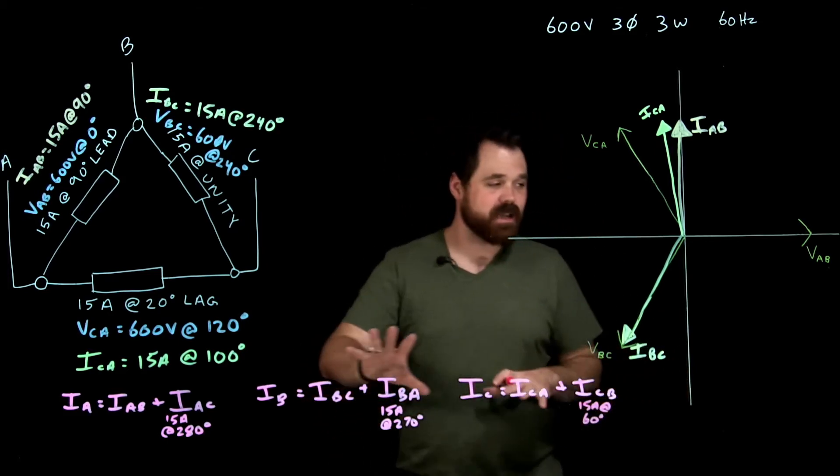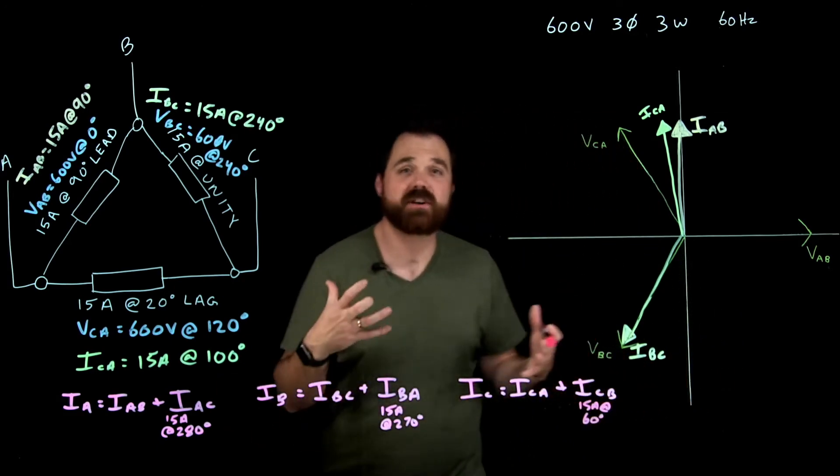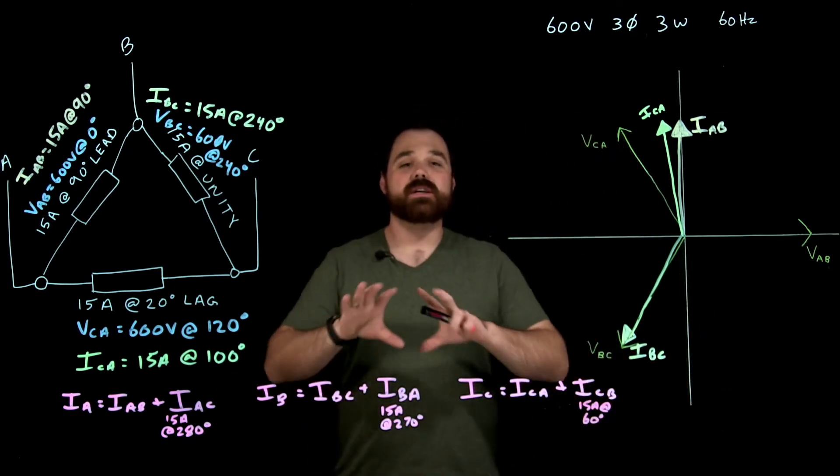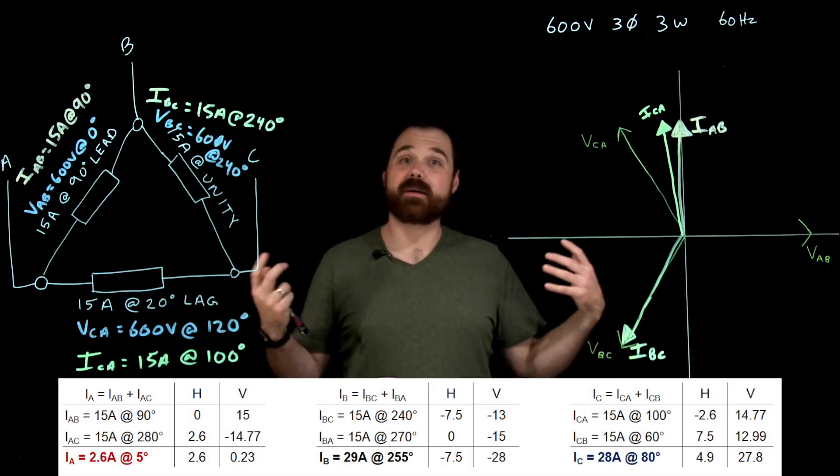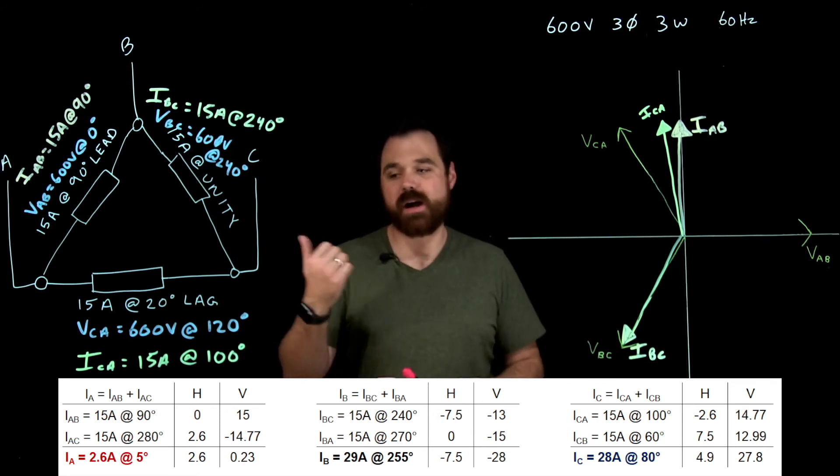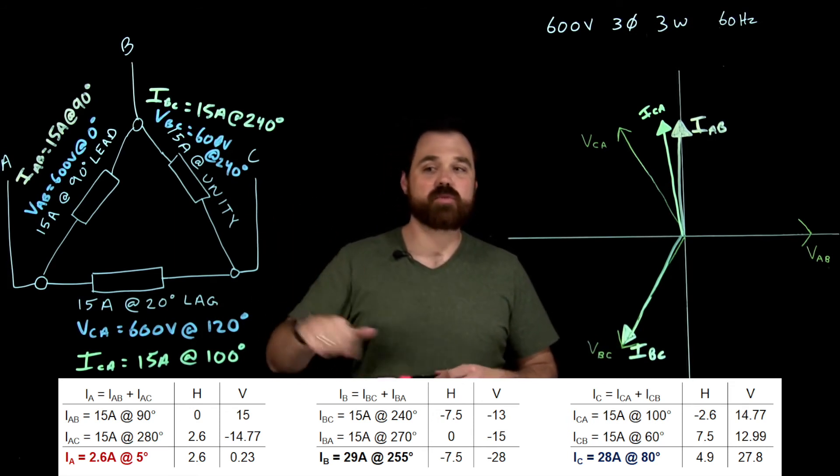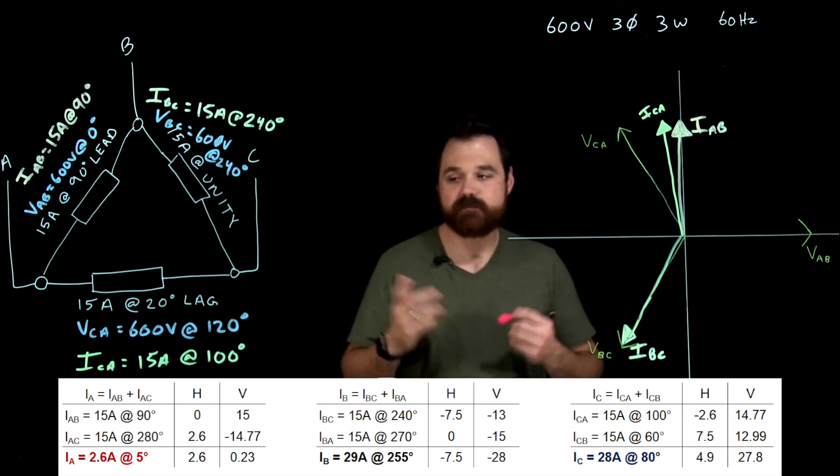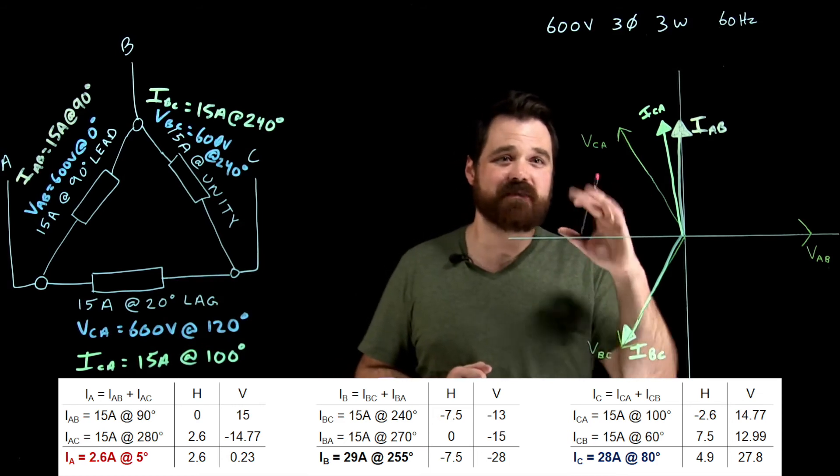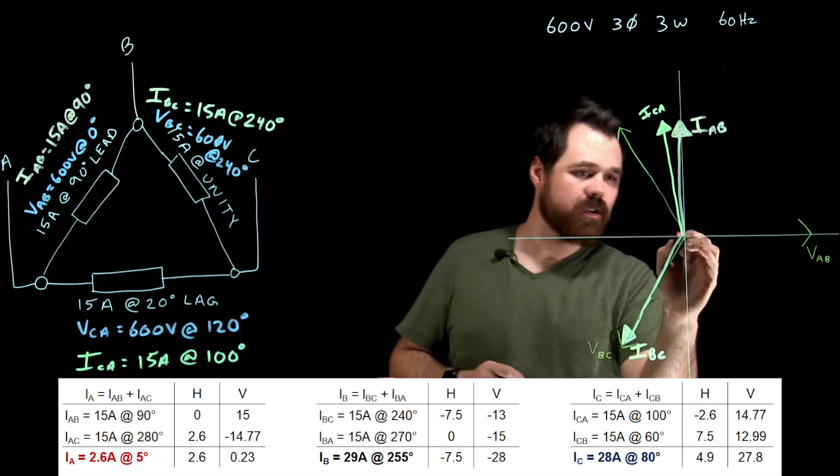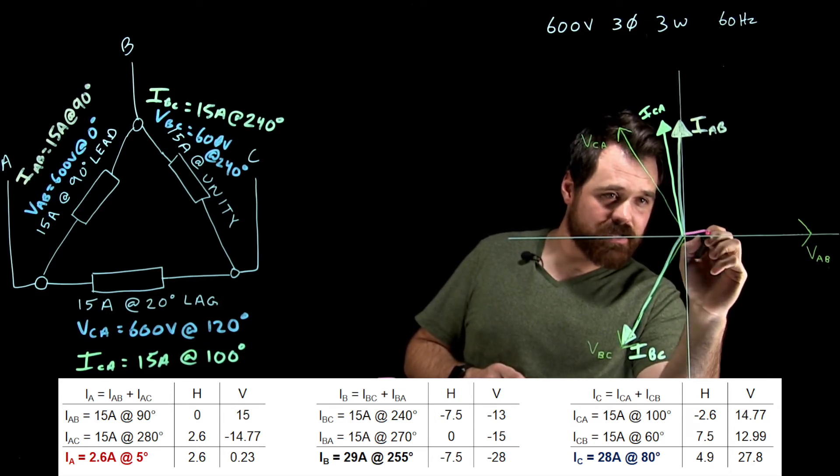Now what I like to do is I like to take those numbers and that equations and I like to put them into an HV chart, which our HV charts end up looking something like this down here. So I do that math, and I'm going to end up with the total I go IAB plus IAC, and it ends up giving me 2.6 amps at five degrees. So IA gives me 2.6 amps at five degrees.